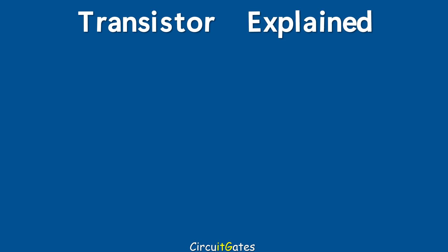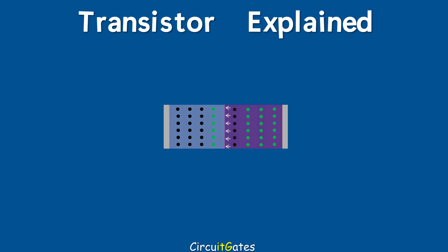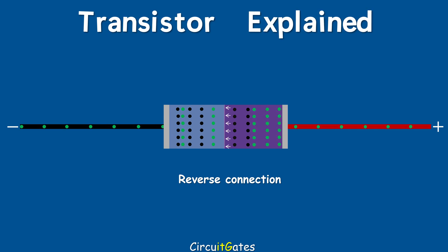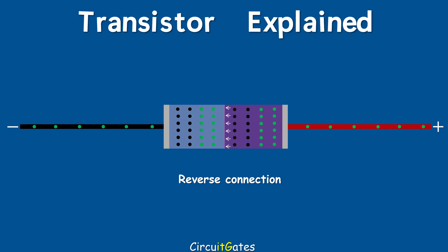When the PN junction is reverse connected, it prevents current from flowing. The negative side of the energy source is connected to the p-type material and the positive to the n-type material. The positive side attracts electrons in the n-type material away from the junction, leaving holes and widening the depletion region. At the same time, the negative side supplies electrons to the p-type material toward the junction, also widening the depletion region. As the depletion region widens, the electric field increases in strength until the barrier potential across the depletion region equals the supply voltage, and current is blocked.